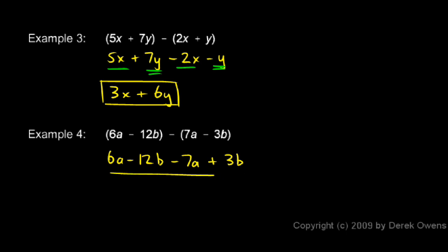Now we can take this expression and combine like terms to simplify it. We have 6a and negative 7a. That ends up being a minus 1a. And of course we don't typically write the 1. We just write minus a. And we have a negative 12b and a positive 3b. Those combine to give us a negative 9b. So negative a and negative 9b, or negative a minus 9b is our answer.